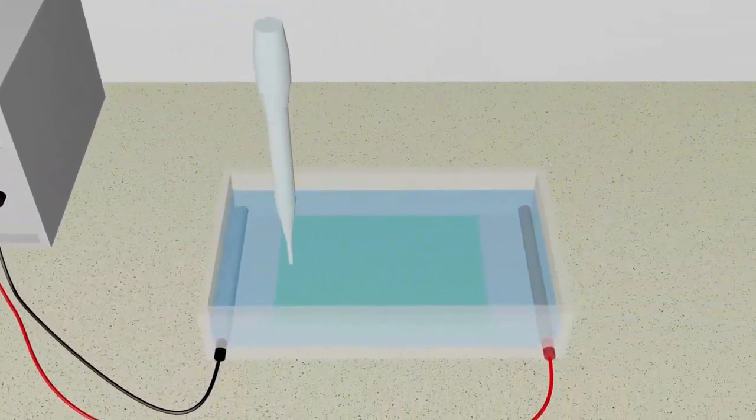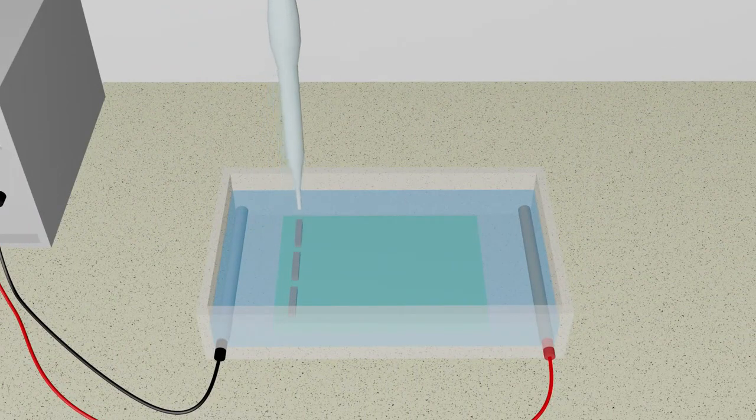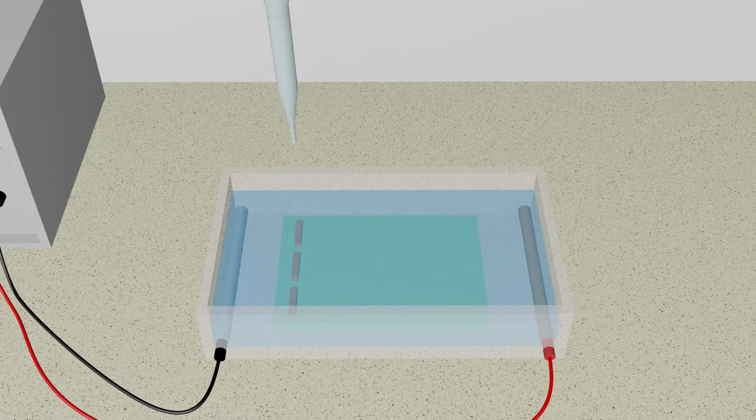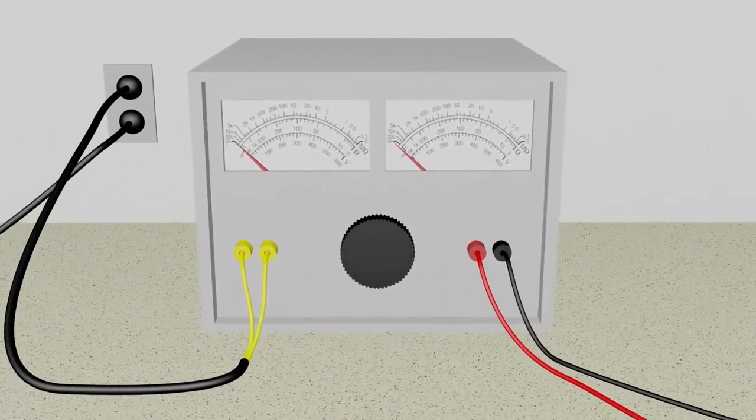Holes are created in the gel that serves as a reservoir to hold the DNA solution. Mixtures of different sizes of DNA fragments are loaded into a well in the gel. The force needed to draw the DNA through the gel is provided by electricity.